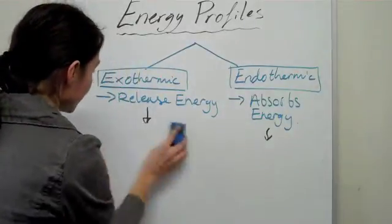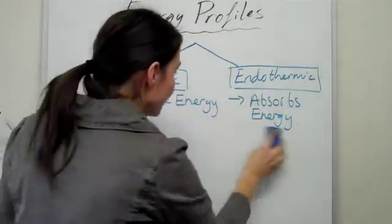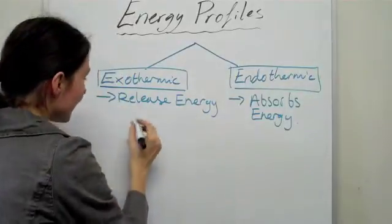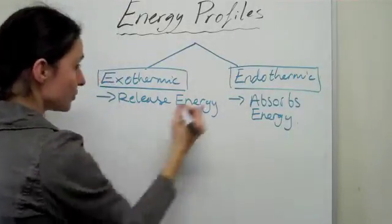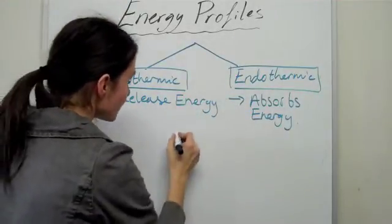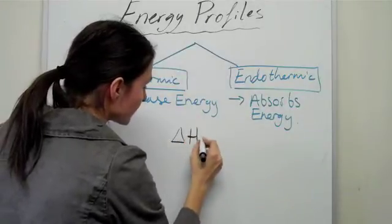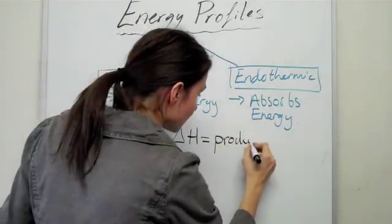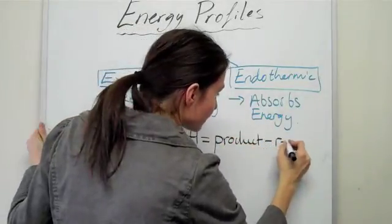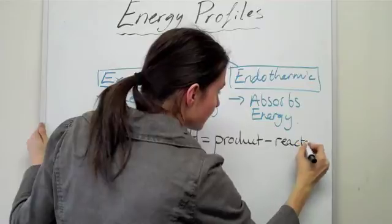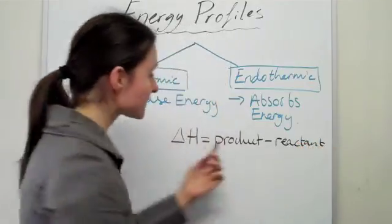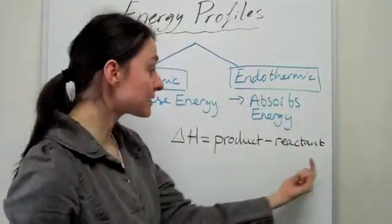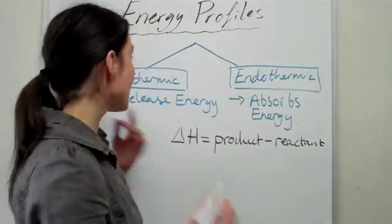Let's have a look at what the delta H value says about these two different types of reactions. So delta H is actually referred to as the product take away the reactants. To be more specific, it's the energy of the product take away the energy of the reactants.